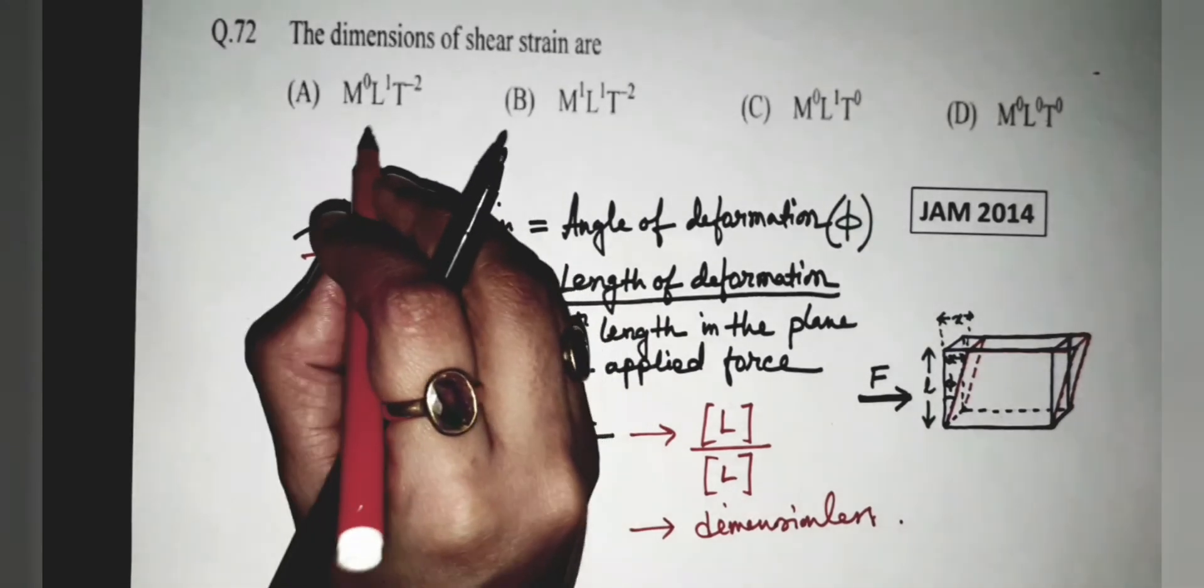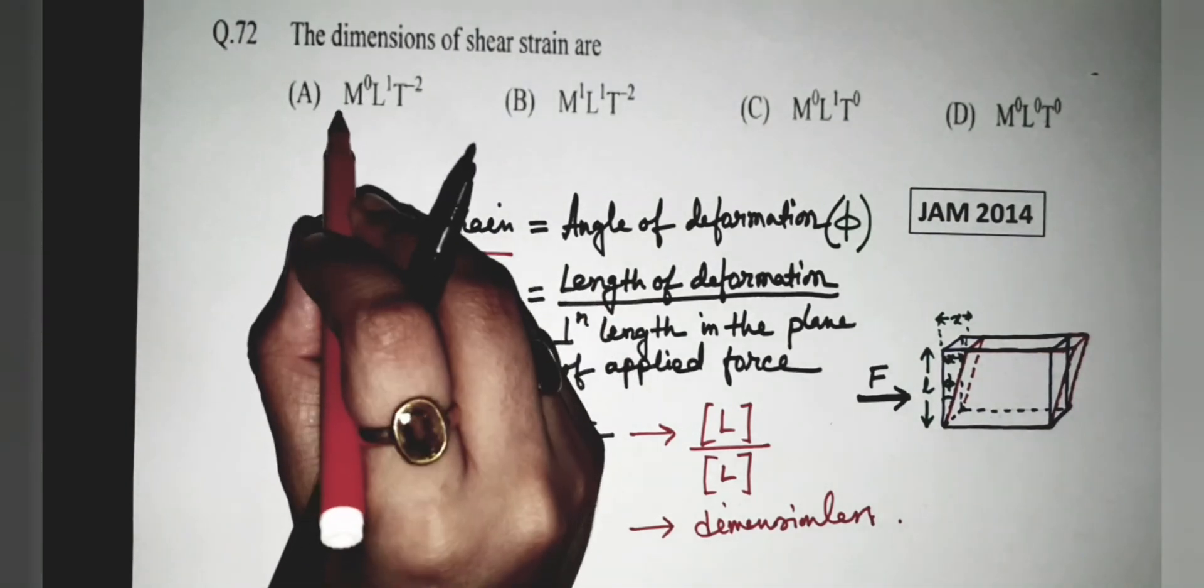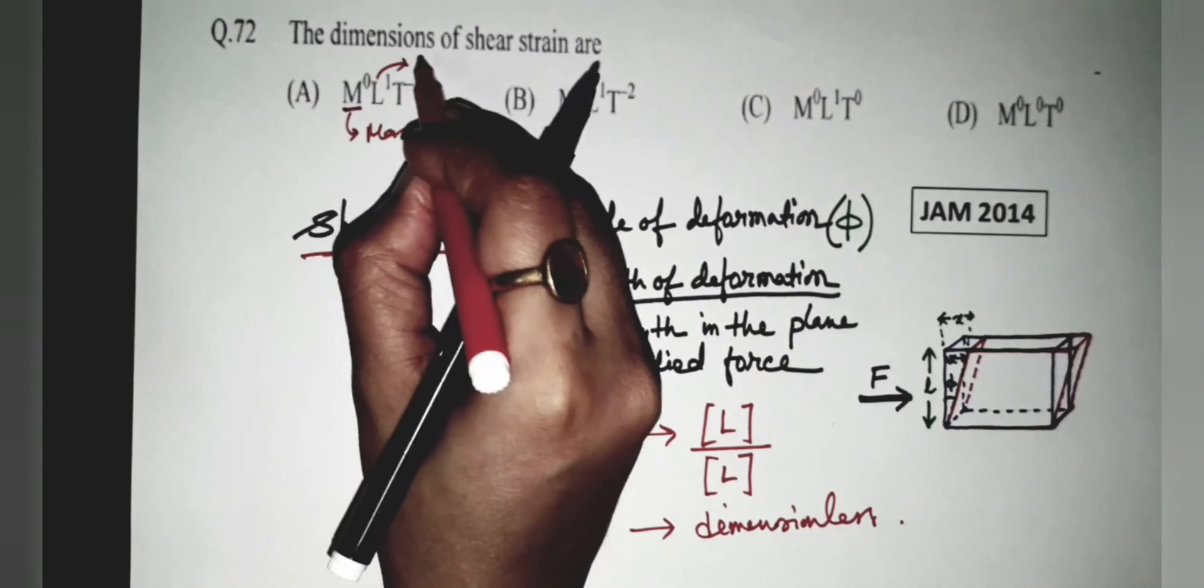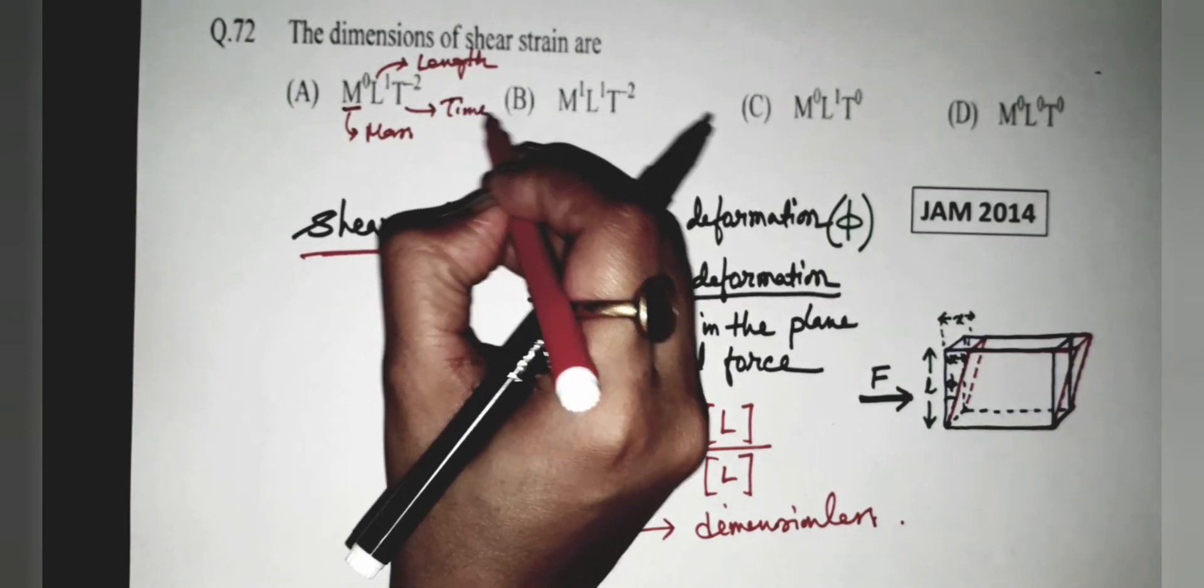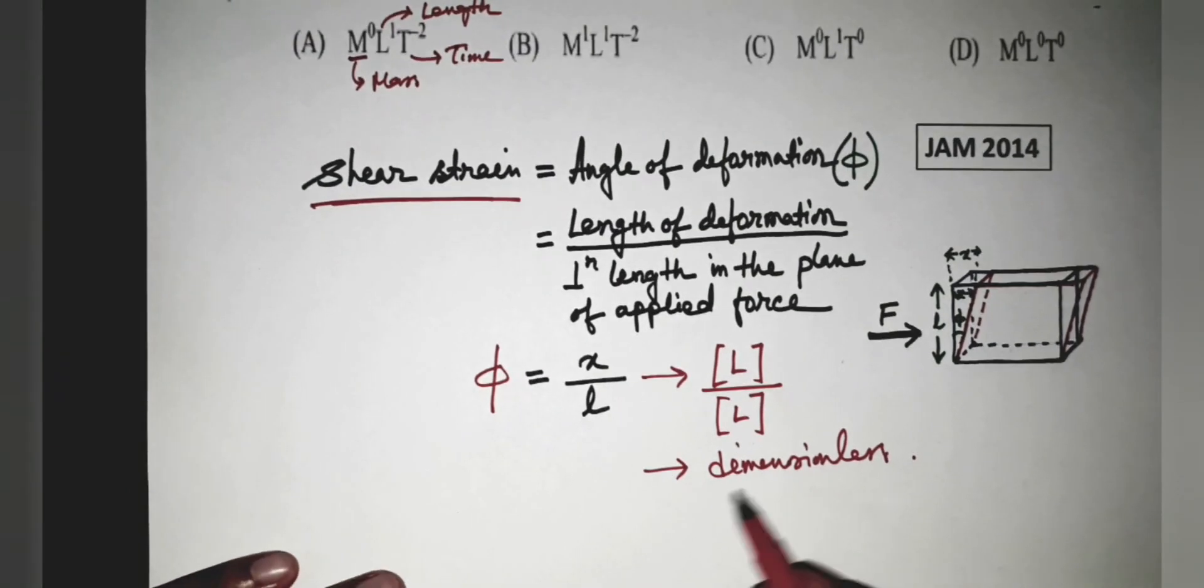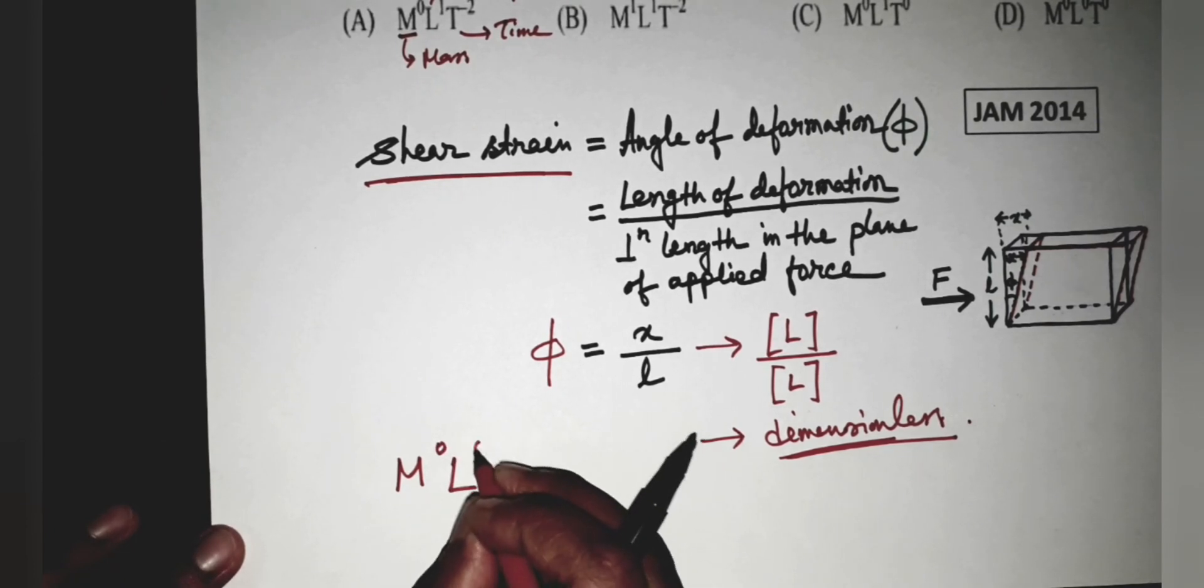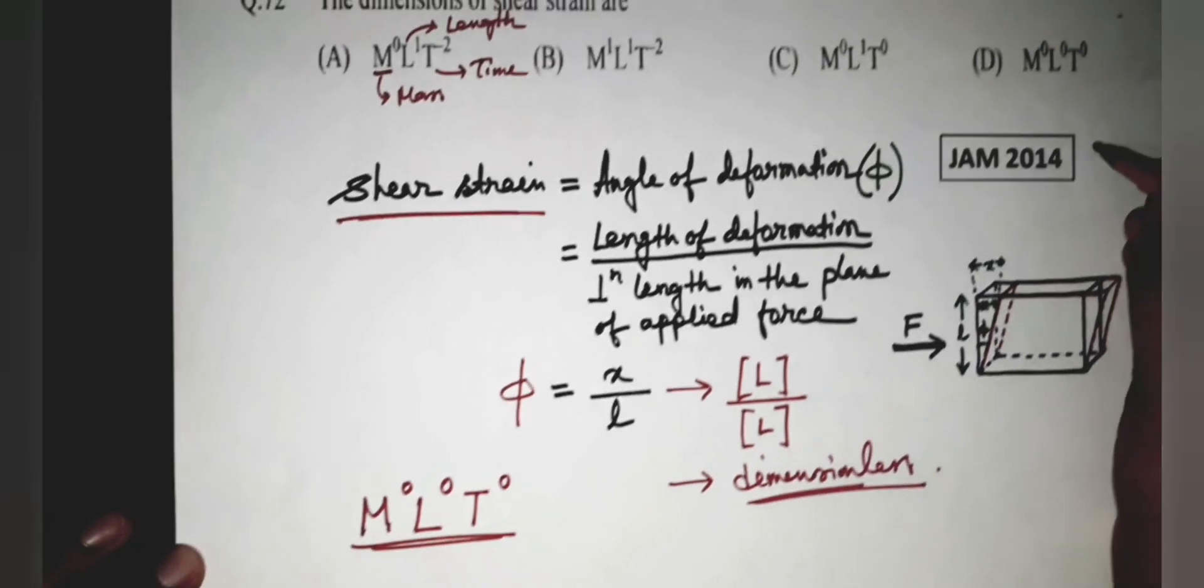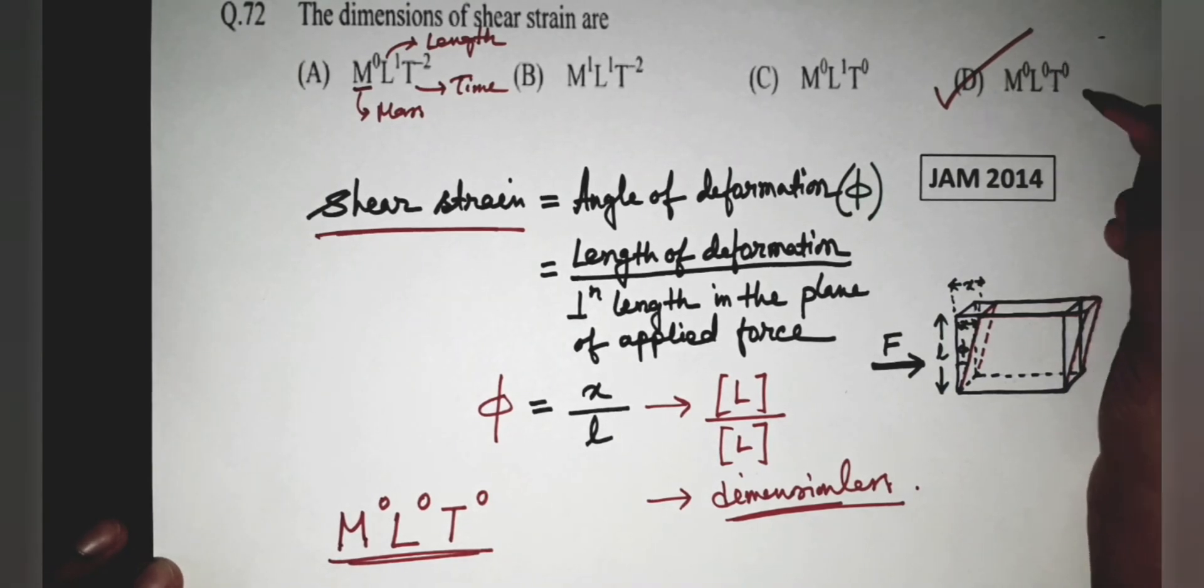If we go to the question and see the options, here I hope you all know that this M stands for mass, L stands for length, and T stands for time. Now, as we get phi or shear strain as dimensionless, we get mass 0, length 0, and time 0. So the correct answer is option D. As the dimensions of shear strain are M to the power 0, L to the power 0, T to the power 0.